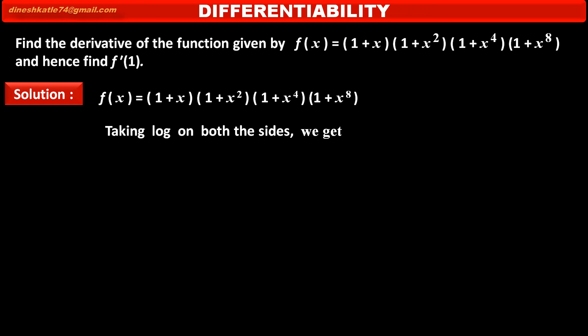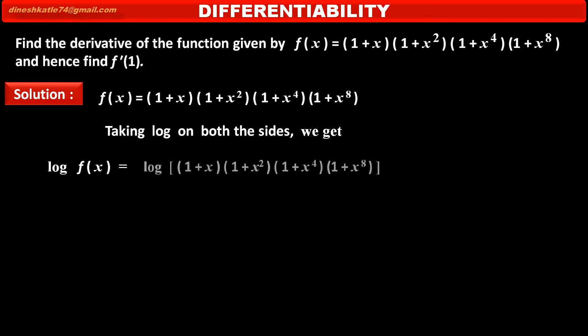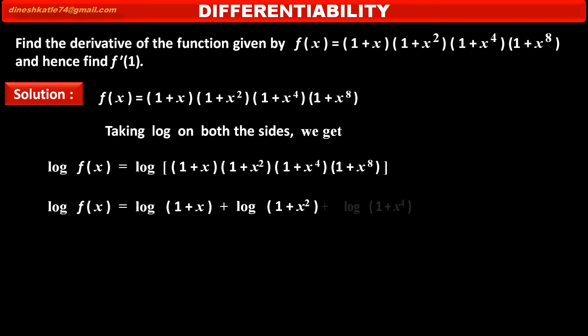See, solution. The given function f(x) = (1+x)(1+x²)(1+x⁴)(1+x⁸). To make it simple, taking log on both sides we get: log f(x) = log[(1+x)(1+x²)(1+x⁴)(1+x⁸)]. Applying the log product rule, log f(x) = log(1+x) + log(1+x²) + log(1+x⁴) + log(1+x⁸).